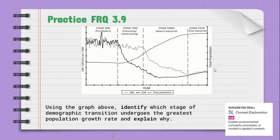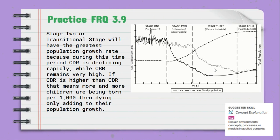The last FRQ: using the graph above, identify which stage of the demographic transition undergoes the greatest population growth rate and explain why. Take a moment and jot this down in your Practice FRQ journal and in the Ed Puzzle. Looking at our demographic transition, Stage 2 — the transitional, industrializing stage — will have the greatest population growth rate. This is because the CDR, the crude death rate, is falling very rapidly, but the crude birth rate still remains very high. At this point, more and more people are still having children, but less and less of them are dying, so we are just adding to the population at an exponential rate.